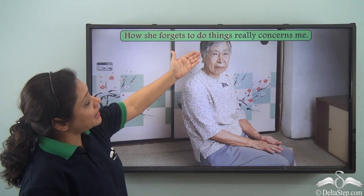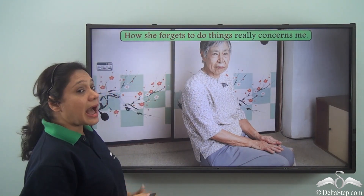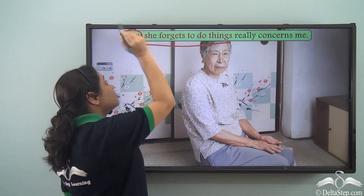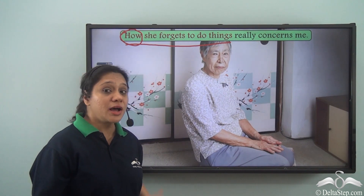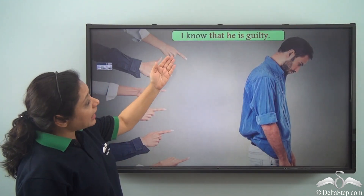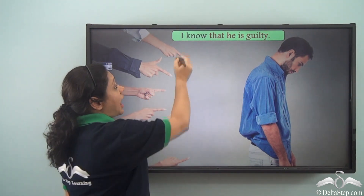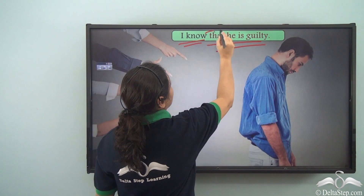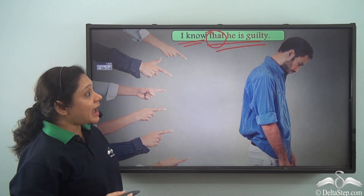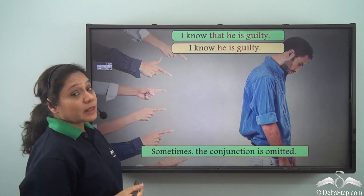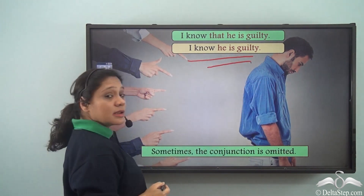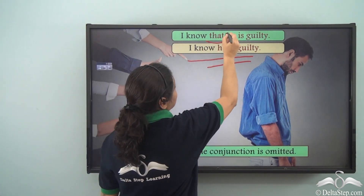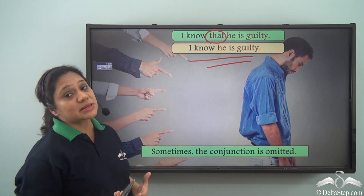'How she forgets to do things really concerns me' — here the noun clause 'how she forgets to do things' comes at the beginning of the sentence, starting with the question word 'how.' 'I know that he is guilty' — 'I know' is the main clause joined with the subordinate noun clause using 'that.' Now 'that' can be omitted at times and we can say 'I know he is guilty.' So we see that sometimes the conjunction is omitted, and the meaning still remains the same.